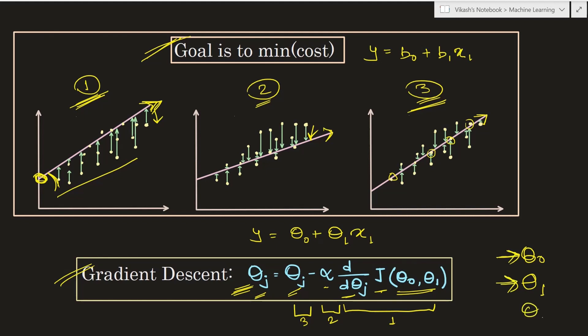One very important thing to remember: the change of values for all parameters — theta0, theta1, and also theta2 or theta3 if dealing with multiple variables — happens simultaneously. All parameter values are updated at the same time using this equation. It is not the case that when changing theta0 you are using an already-updated theta1 in the cost function. That is pretty much all you need to know about gradient descent at this point. We will cover this topic further as we move ahead in the playlist. Thank you very much for your time.